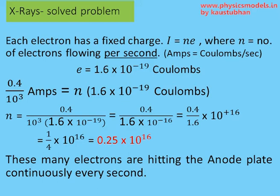When you put that into this equation, you'll get n as 0.4 by 10 to the power 3 divided by 1.6 times 10 to the power minus 19, and that works out as 0.25 times 10 to the power 16. These are the number of electrons hitting the anode every second.